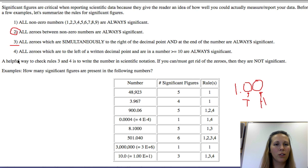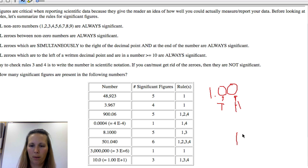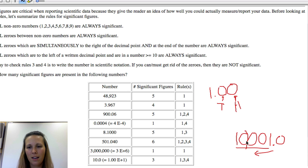And our fourth rule, all zeros which are to the left of a decimal point and are in a number are always significant. So if they're greater than 10. So for example, we have the number 10,001.0. All of these zeros on this side, the placeholders are significant.